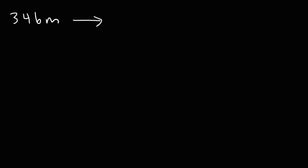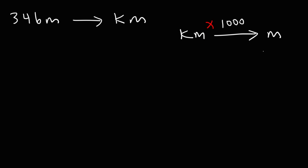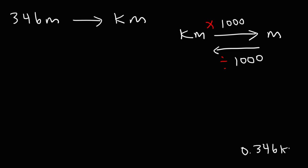Now, how do we go from meters to kilometers? Let's say we have 346 meters — how can we convert that to kilometers? Recall that converting kilometers into meters required multiplying by 1,000, but going from meters to kilometers means we need to divide by 1,000. Taking 346 and dividing by 1,000 — when dividing by 1,000 you can move the decimal point three units to the left — gives us 0.346 kilometers.